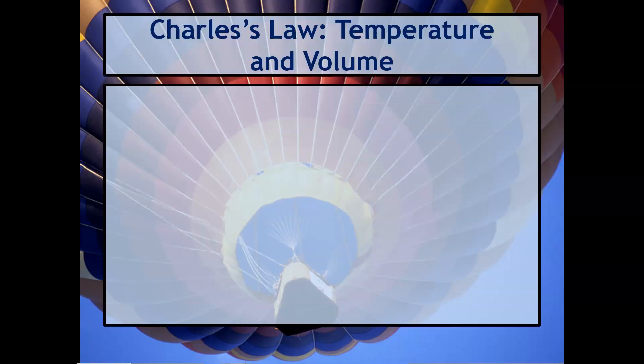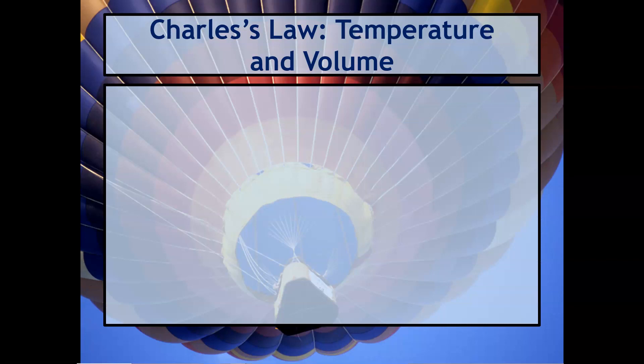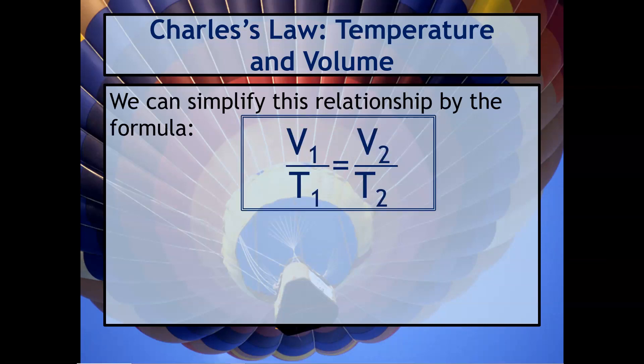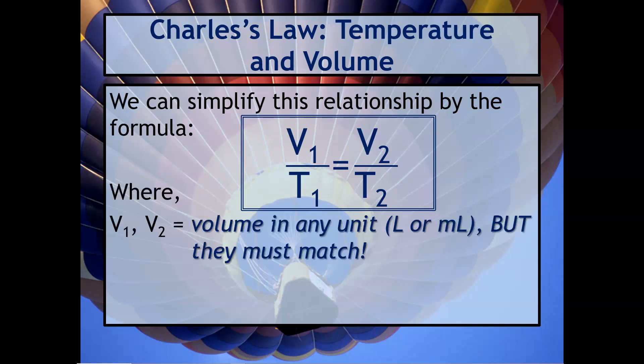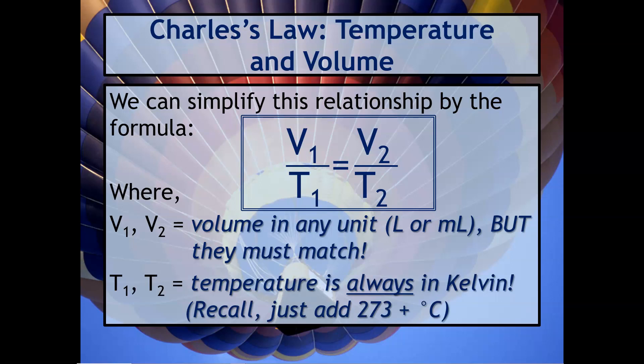Remember we said temperature always has to be in Kelvin, that's really important. We can simplify this formula by putting V1 over T1 equals V2 over T2, where V1 and V2 are the volume in any unit. Again, they have to match. T1 and T2 is going to be temperature and this one you don't have a choice here, it has to be in Kelvin in order for this relationship to be true. You have to be adding 273 to any degree Celsius temperatures.